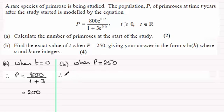So we're therefore going to get 250 equals 800 times e to the power 0.1t, and that's divided by 1 plus 3e to the power 0.1t. So what I want to do next is multiply through by this denominator to both sides: 1 plus 3e to the power 0.1t.